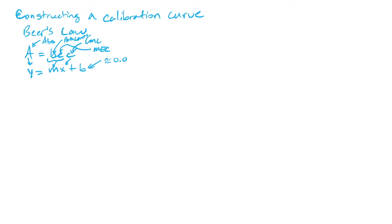What that means in real life is that whenever you take a blank and you put it into a spectrophotometer and you zero it out or blank the spectrophotometer, you're essentially telling the spectrophotometer that this should be zero because this is my standard sample that has no analyte in it. So no analyte should be zero. That's why in Beer's Law, the B for the Y-intercept in Y equals MX plus B isn't really represented.